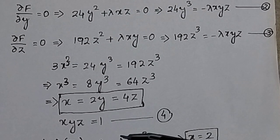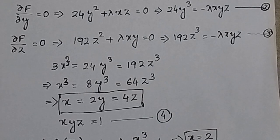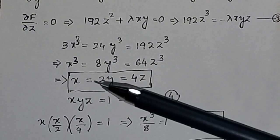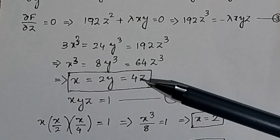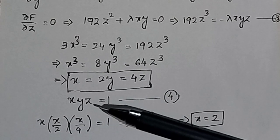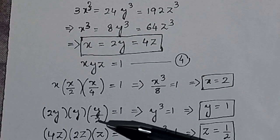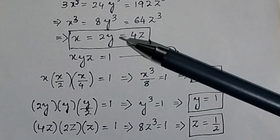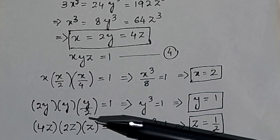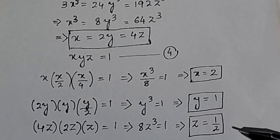Now substitute into the constraint condition xyz = 1. Express y = x/2 and z = x/4 in terms of x, giving x · (x/2) · (x/4) = 1, so x = 2. Similarly, solving for y by writing x = 2y gives y = 1. Solving for z gives z = 1/2.